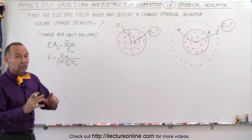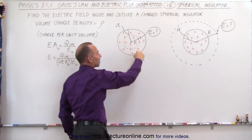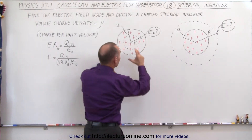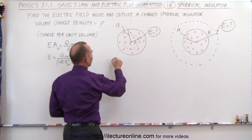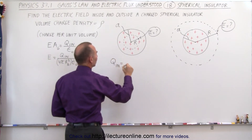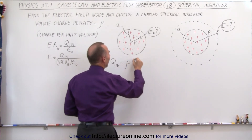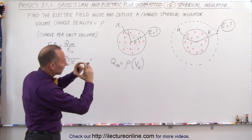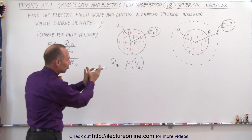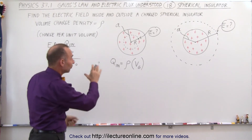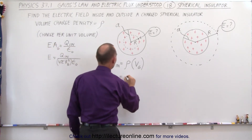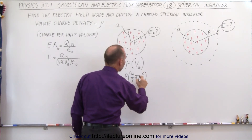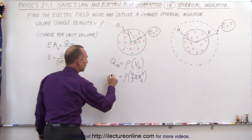What we need to do in each case is determine how much charge there is inside the Gaussian surface. For the interior case, we say that Q inside the Gaussian surface equals the charge density times the volume of the Gaussian surface. So that equals the density times four-thirds pi times the radius of the Gaussian surface cubed — that will be the charge inside.